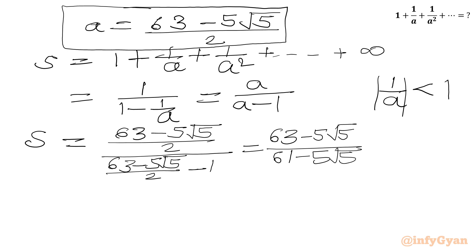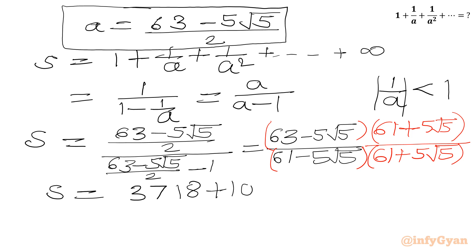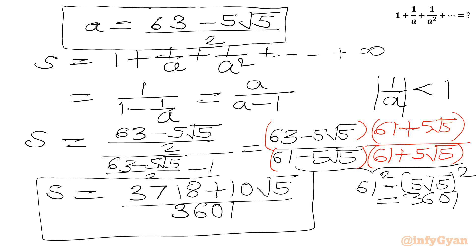Now we rationalize the denominator by multiplying numerator and denominator by (61 plus 5√5). The numerator product gives 3718 plus 10√5 (after expanding). The denominator gives 61 squared minus (5√5) squared, which equals 3721 minus 125 equals 3601. So the final answer is S equals (3718 plus 10√5) over 3601.